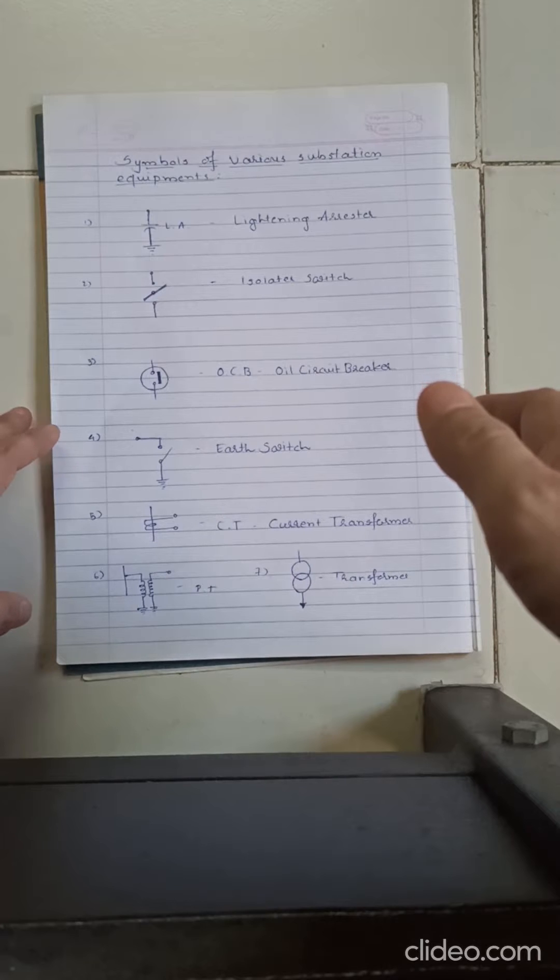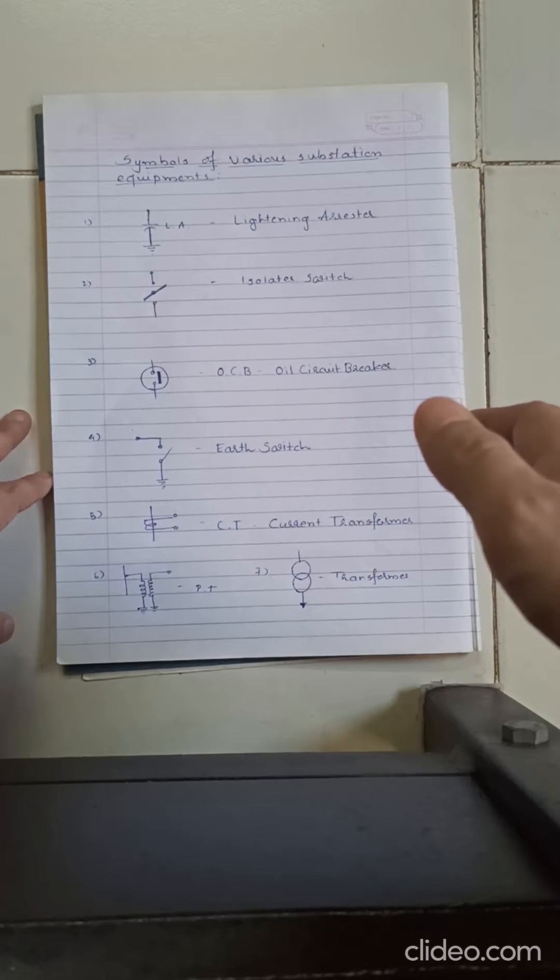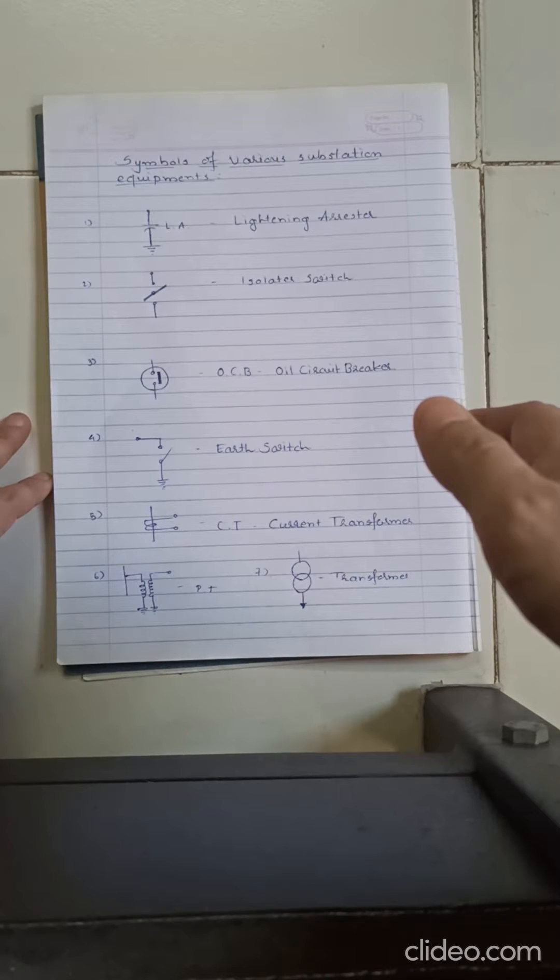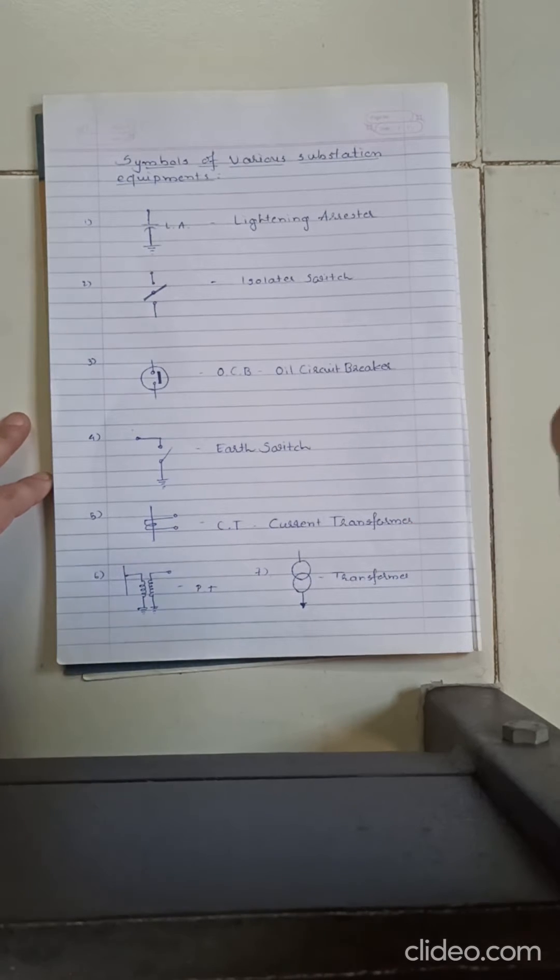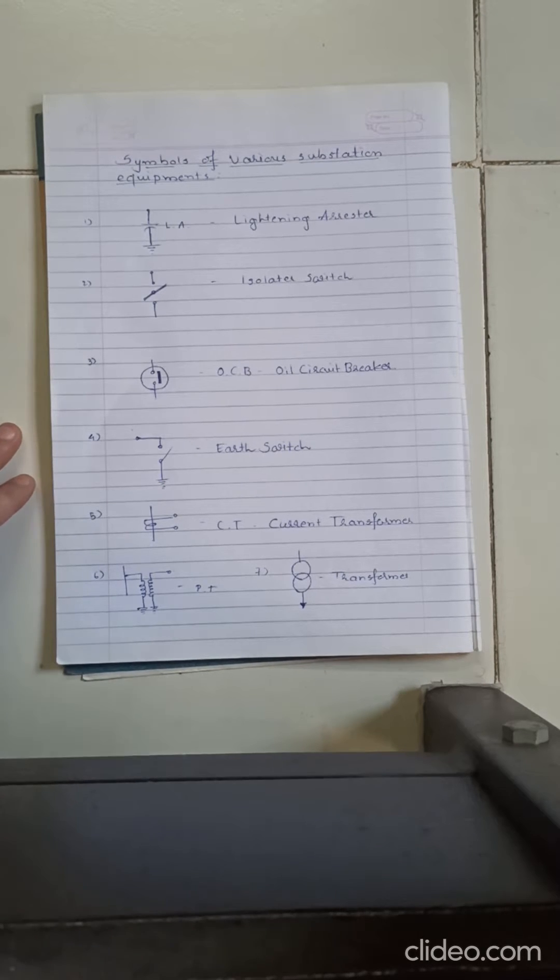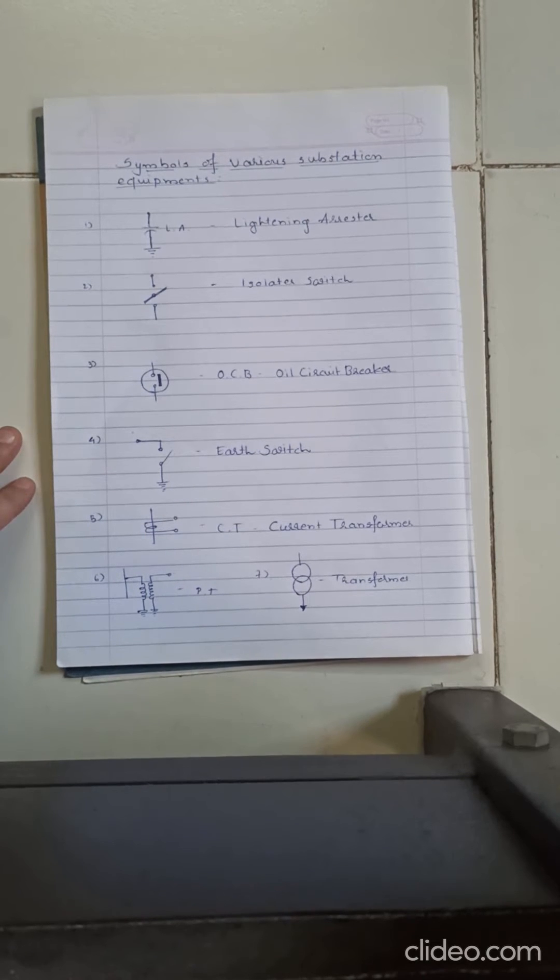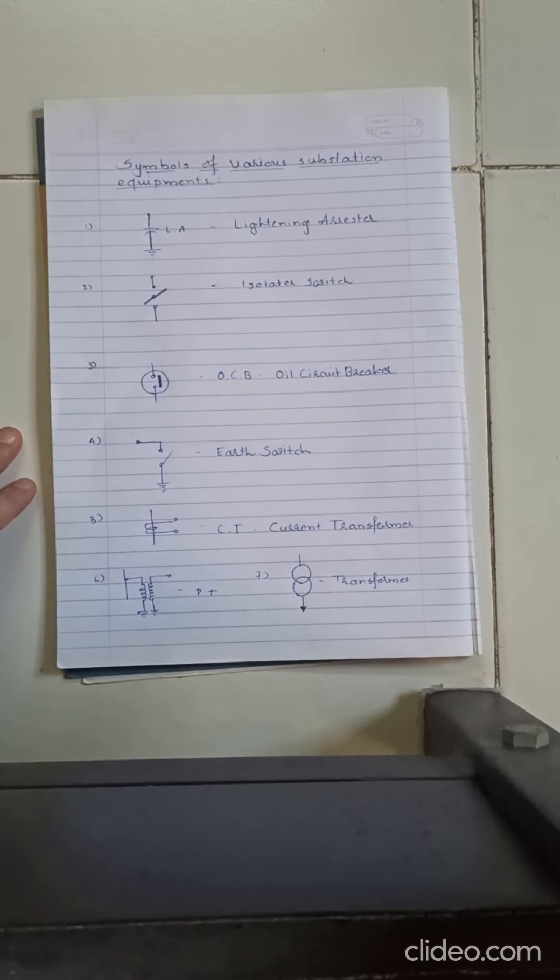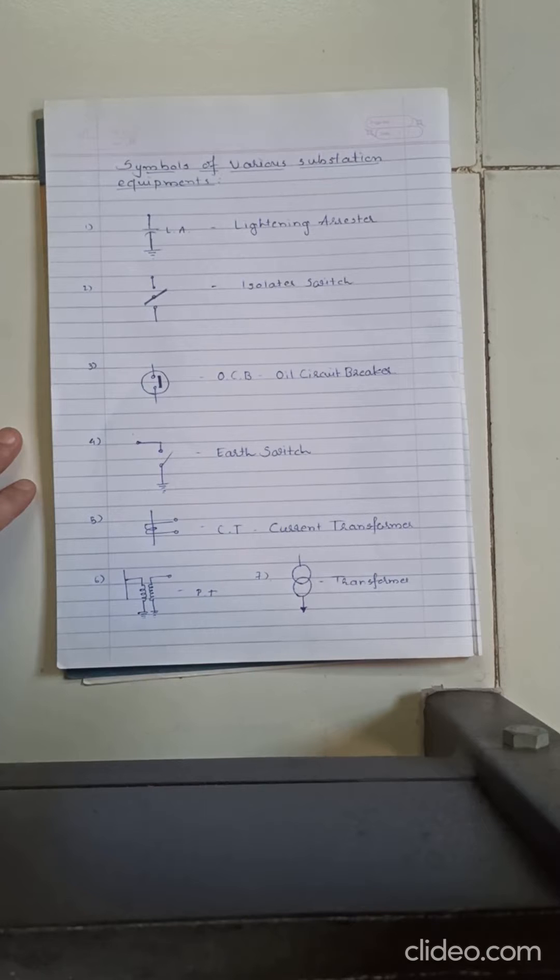So we are going to see today Unit 5, and mainly in Unit 5 there are other theory parts, but we are going to focus on topics like arrangement of bus bar in substation and one line key diagram of various substations. In order to move to these topics, first we need to have knowledge of certain symbols of instruments that are being used in substation.